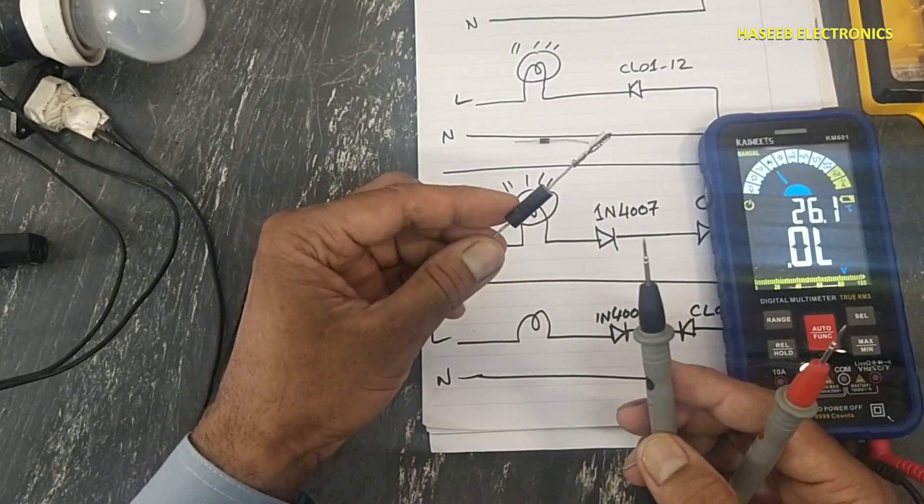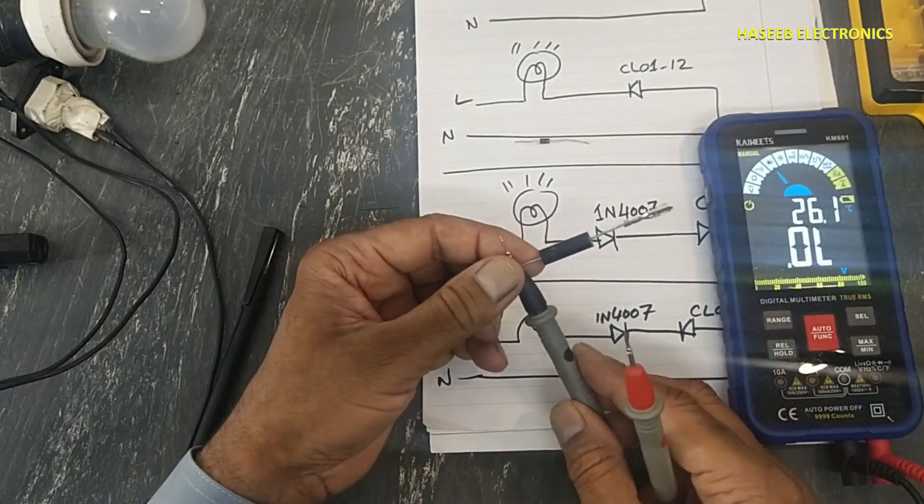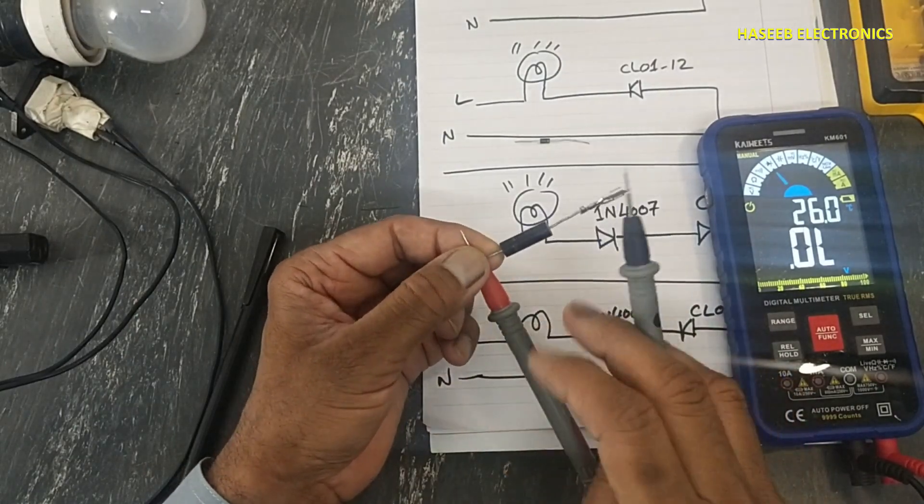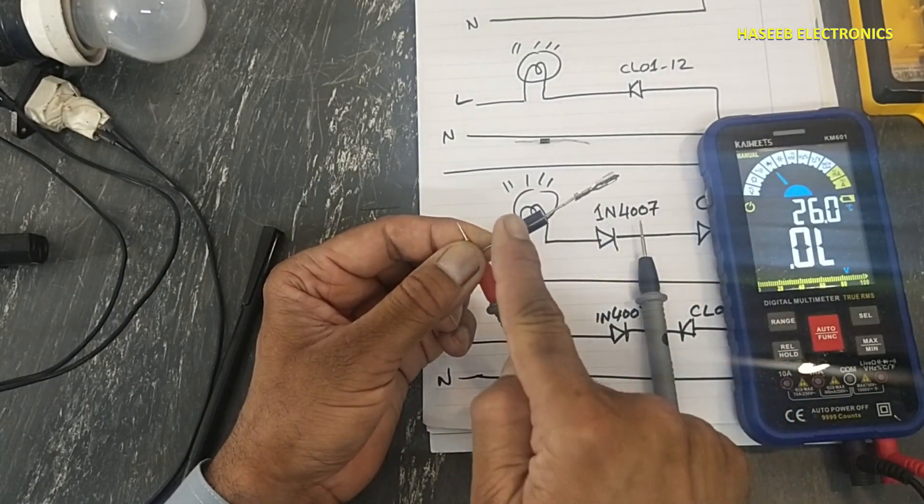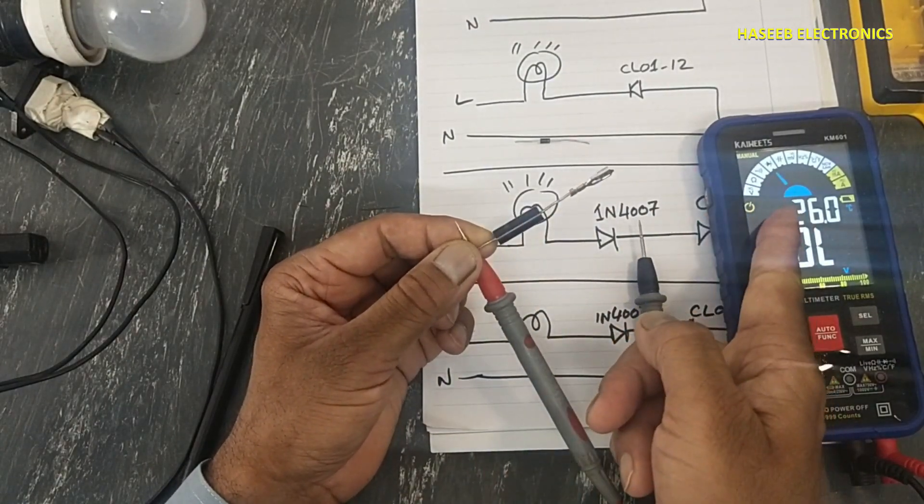If we want to test this diode in diode mode, at that time we cannot test it. Why? Because its junction voltage is higher than the battery voltage.